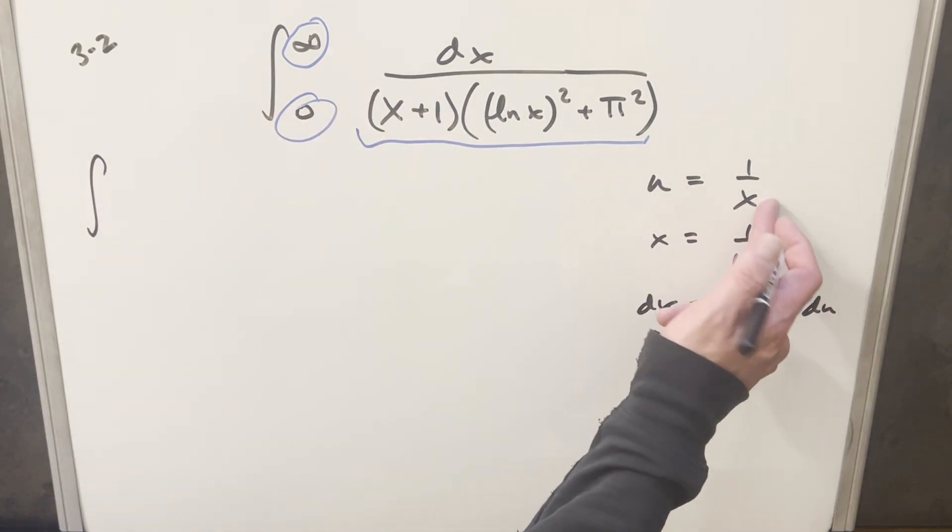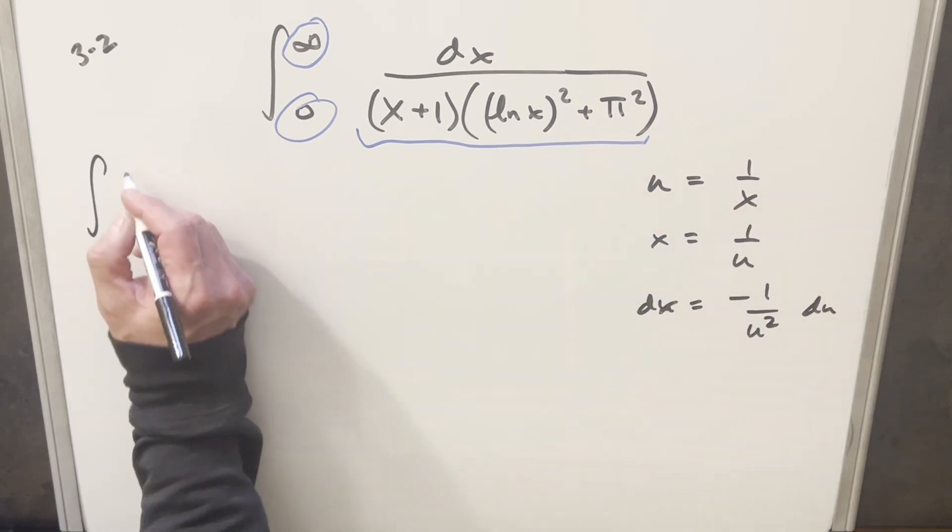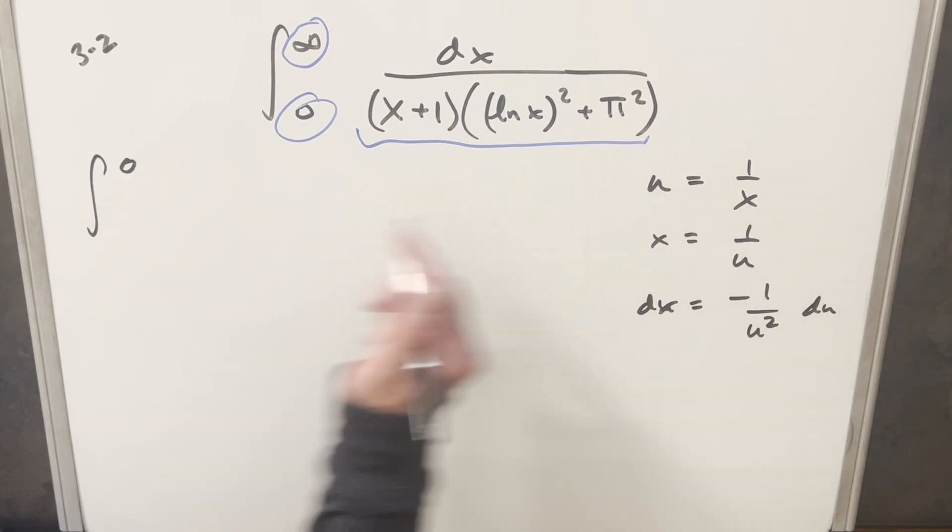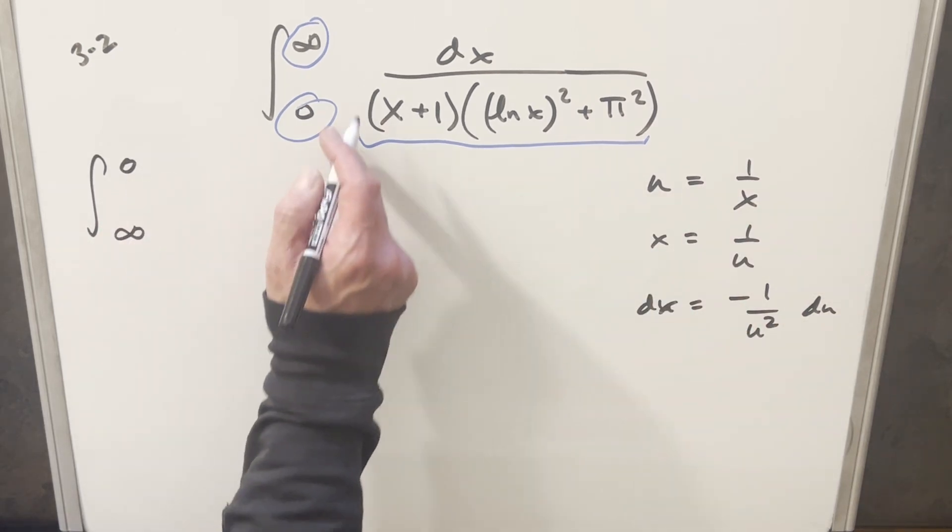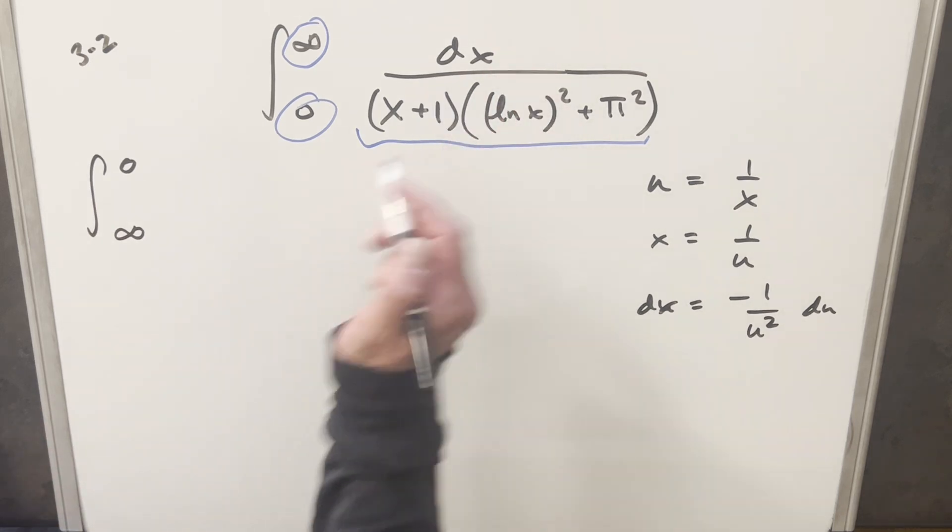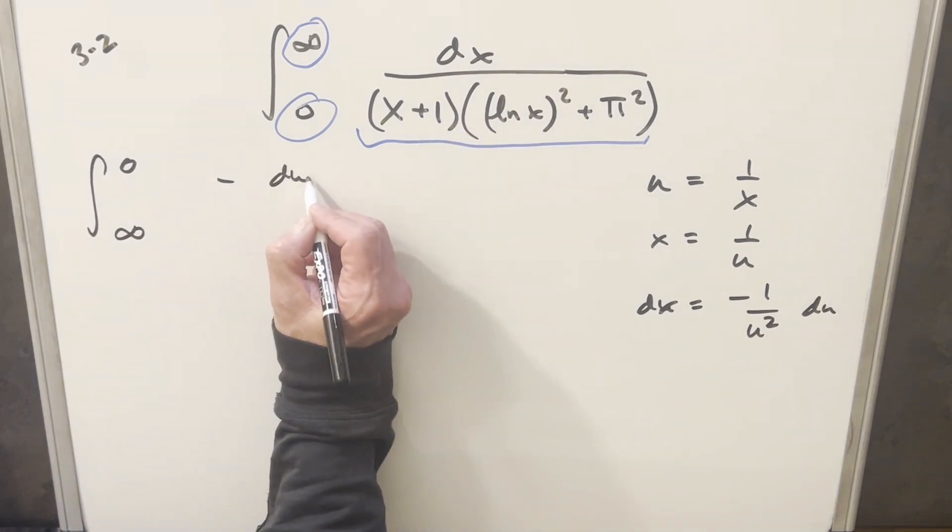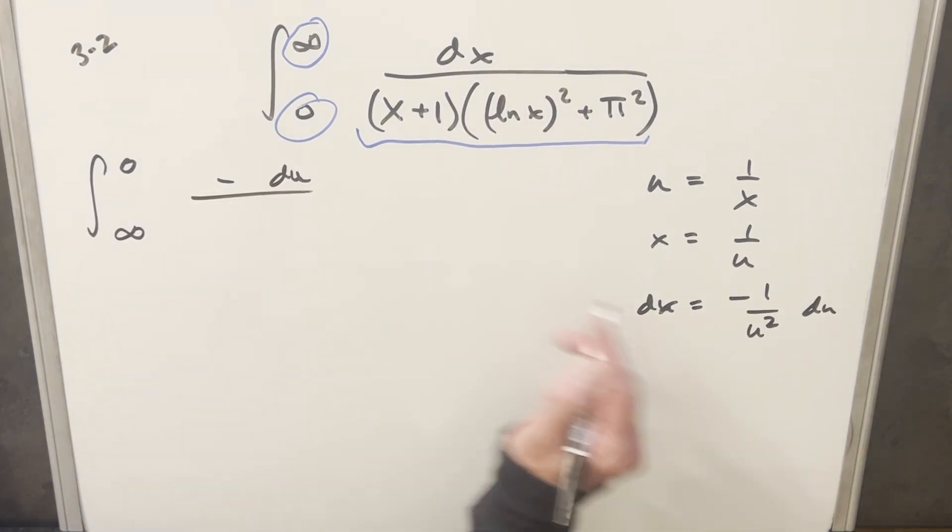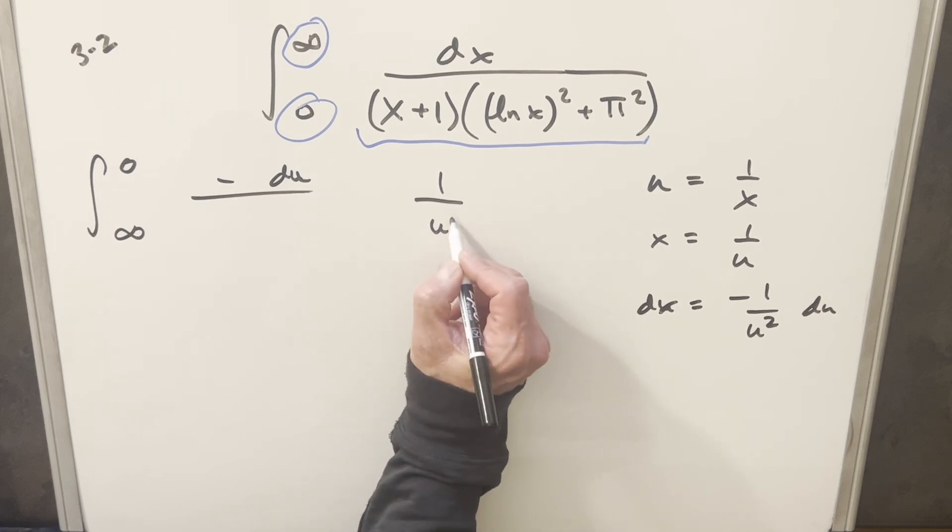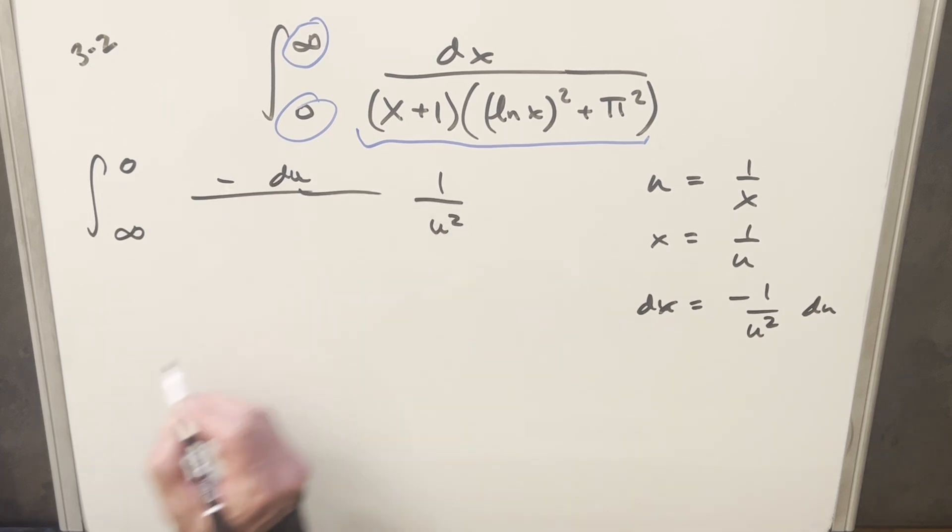First, plugging infinity, and when you plug infinity in for x, this thing's going to 0. And then when you plug 0 in, it's going to infinity, so we just flipped our bounds around. Then for the dx, I'm going to write this as minus du here. And then for the u squared, I'm just going to bring it all the way over here, because I know I'm going to want to multiply this back in.